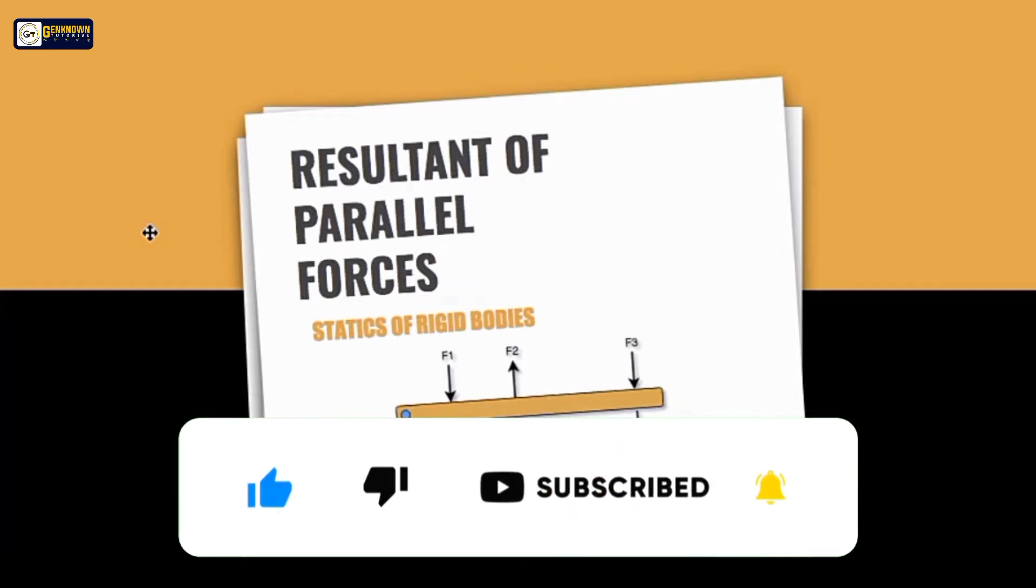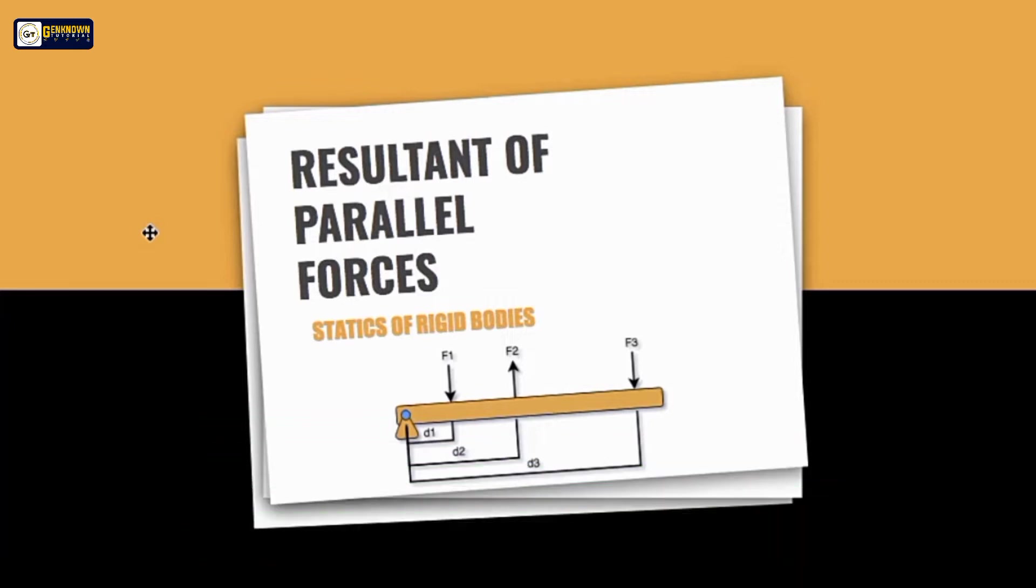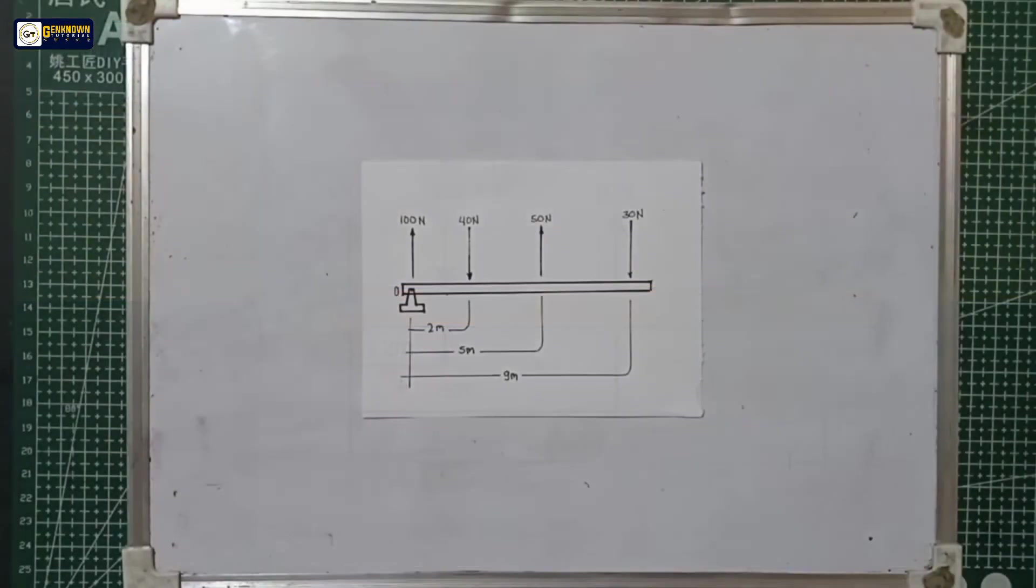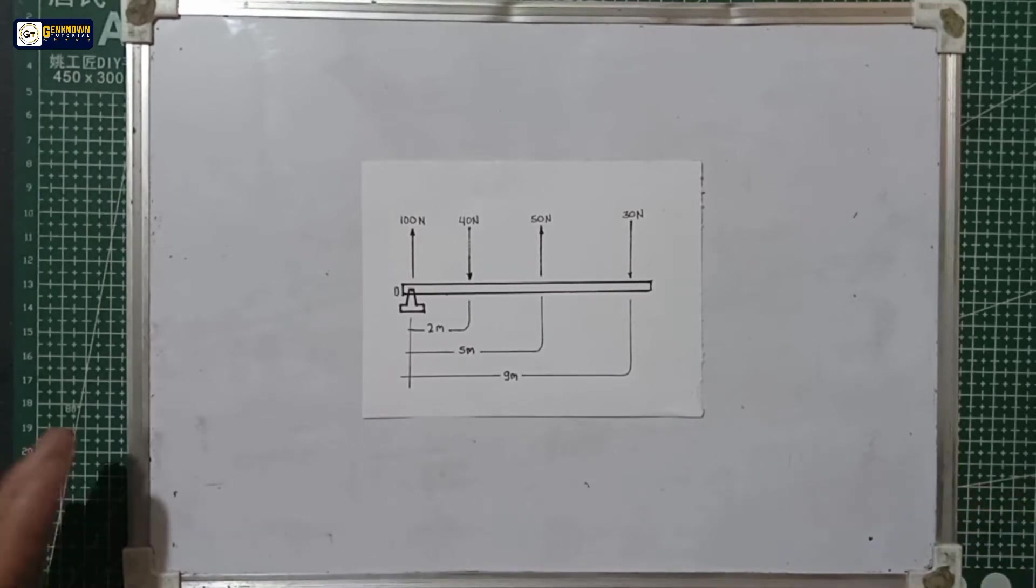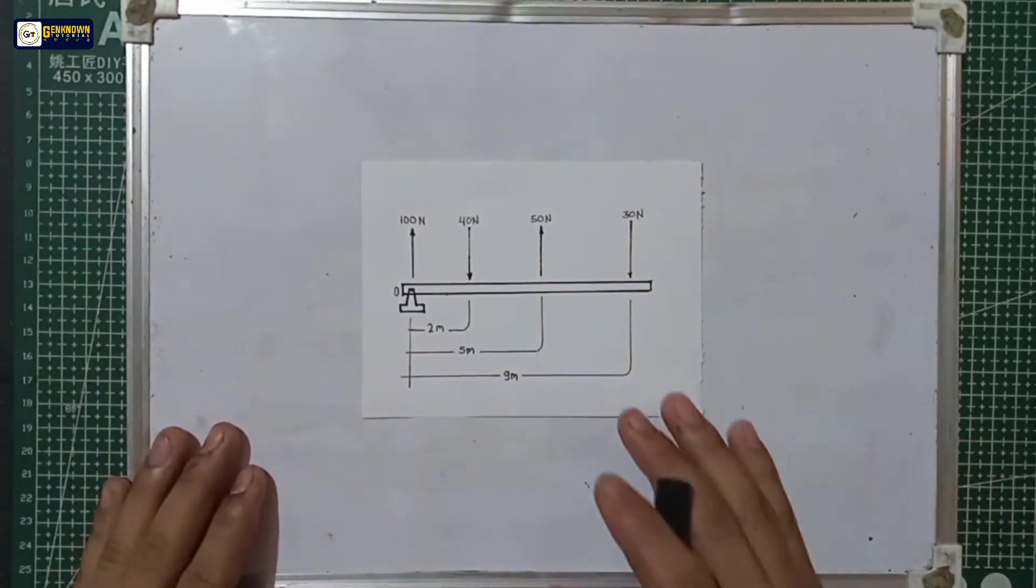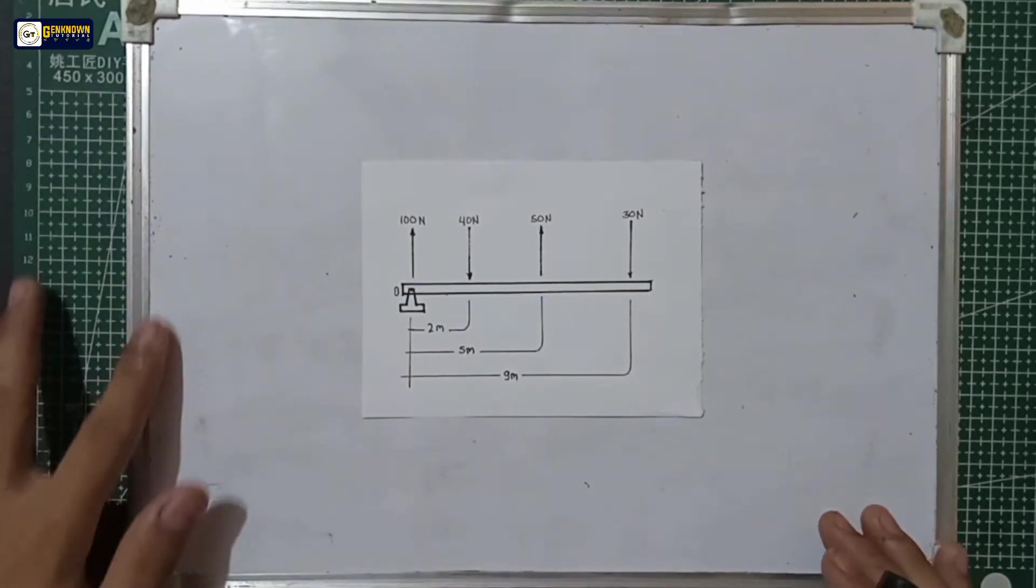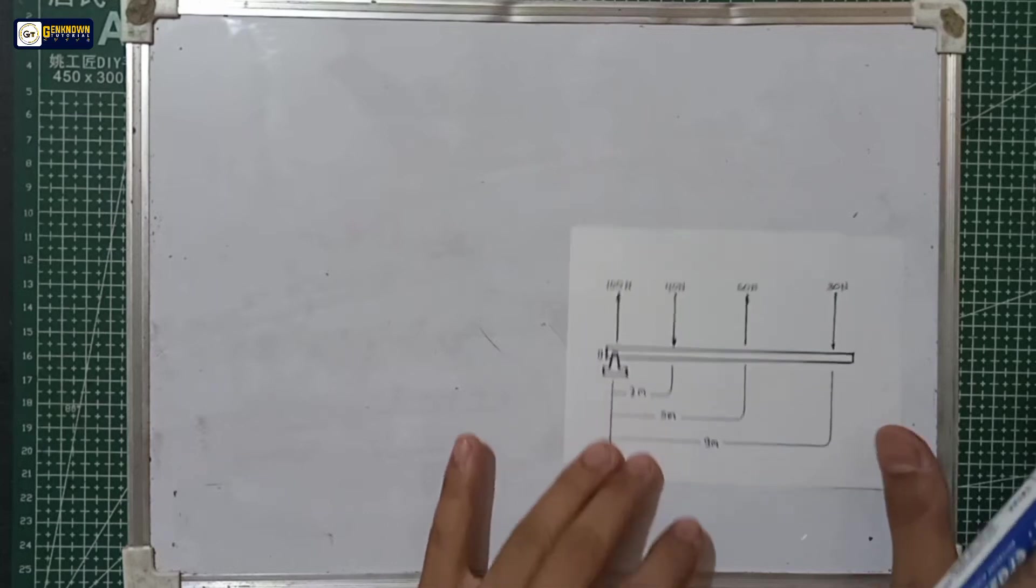So this is our problem number one. There are some things we need to remember. First, the formula for the resultant, where the resultant is equal to the square root of the vertical forces squared plus the horizontal forces squared. And also the principle of moment, where the moment is equal to the force multiplied by the distance.